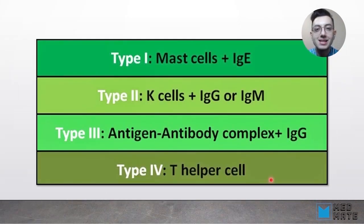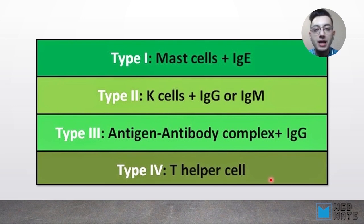Now briefly let's review all four hypersensitivity reactions. The first type involves mast cells and IgE, which leads to degranulation of mast cells. In type 2 reaction, we are talking about K cells and natural killer cells binding to IgG or IgM and killing or lysing the cells.